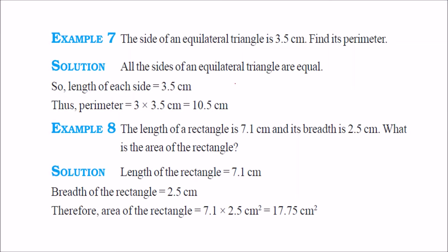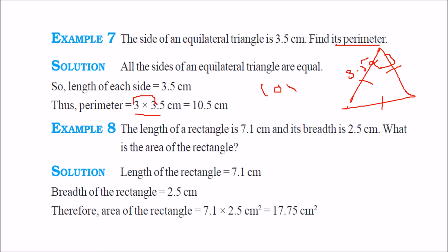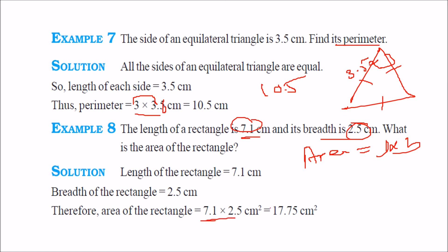The sides of an equilateral triangle measure 3.5 cm. Since all sides are equal, the perimeter is 3.5 into 3. Multiply 3 by 35 to get 105; with one decimal place, the answer is 10.5 cm. For a rectangle of length 7.1 cm and breadth 2.5 cm, area equals length into breadth: 7.1 into 2.5. Multiplying 71 by 25 gives 1775; with two decimal places total, the area is 17.75 square cm.